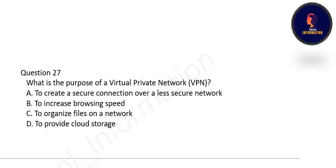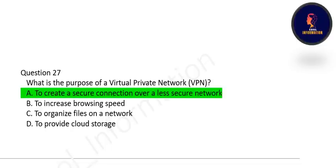Next question: what is the purpose of a Virtual Private Network (VPN)? The correct option is A — to create a secure connection over a less secure network. The purpose of a VPN is to create a secure connection over a less secure network.